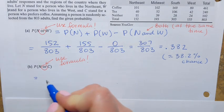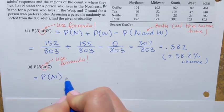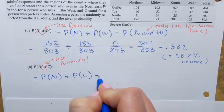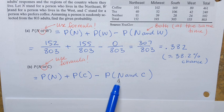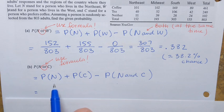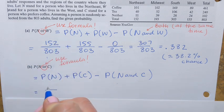Expanding with the general addition rule: P(N or C) equals P(N) plus P(C) minus P(N and C). For the first probability, P(N), we already found that from the previous part: it's 152 over 803.